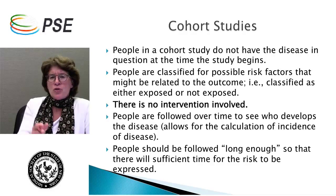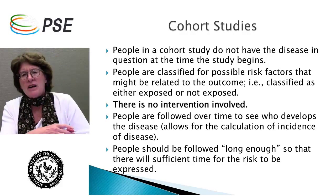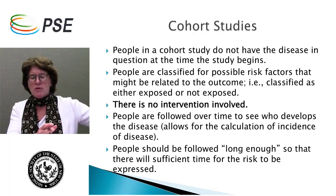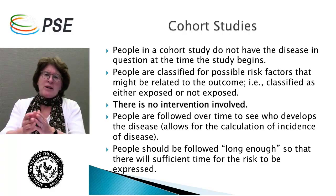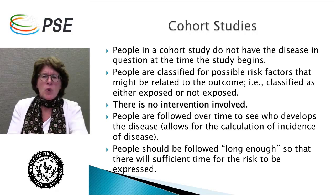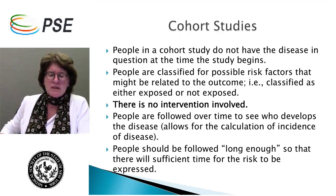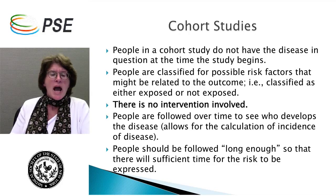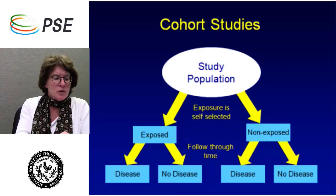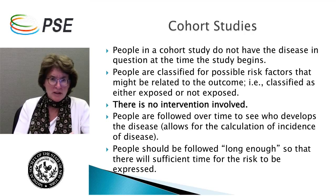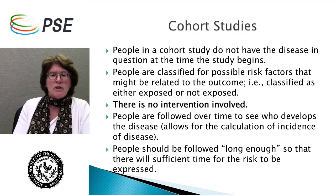We can short-circuit the cohort study by going back in time — this is called a historical cohort study, where we collect data that happened in the past among the cohort and then follow forward. So there are actually two types of cohort studies: one goes forward automatically — you watch, wait, disease develops — or you go back in time and then follow forward. We need to make sure we're following people for a sufficiently long period of time. What we're doing is comparing those who were exposed to those who were not exposed, then looking at disease development. We do this prospectively and use a statistic called the relative risk.